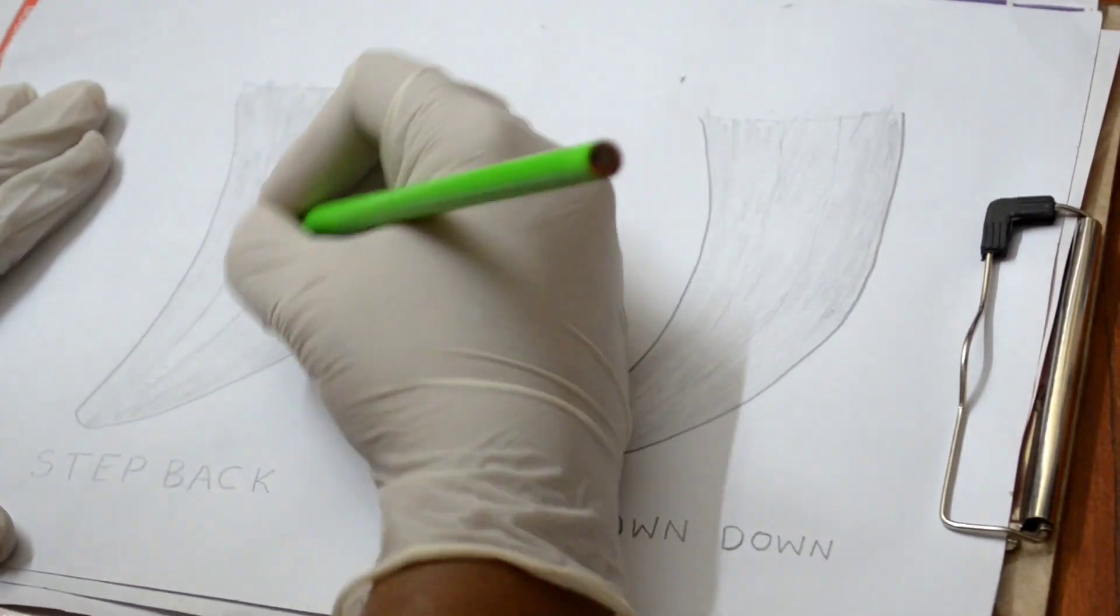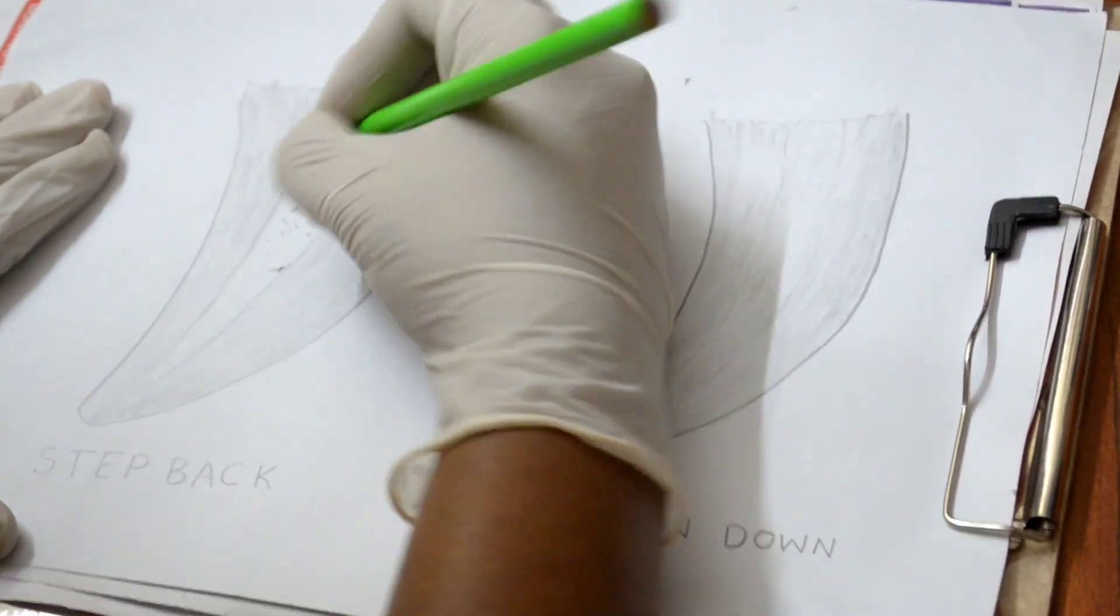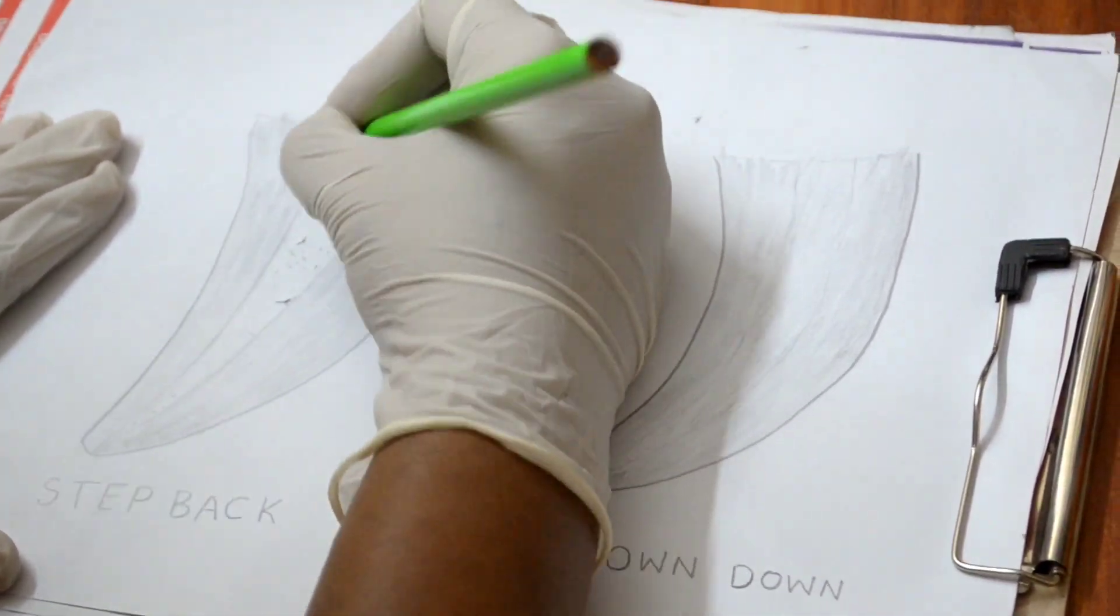Step back technique involves preparation of the root canal first in the apical one-third, followed by the shaping of middle third and coronal third.